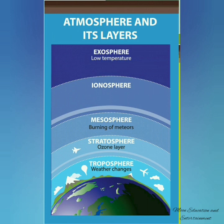Atmosphere. Our earth is surrounded by a huge envelope of air called the atmosphere. Our atmosphere extends more than 800 km above the earth's surface and is held in place by the earth's gravity. Gravity also helps protect us from many harmful rays which come directly from the sun. The air envelope is thicker nearer the earth's surface, and as we go higher, the force of gravity decreases, so it is not able to hold a large amount of air.